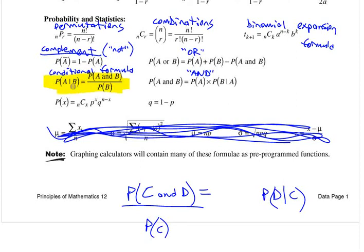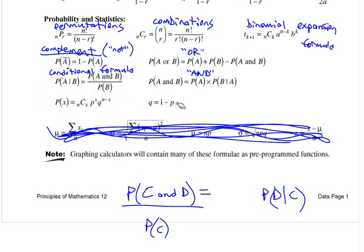That's the conditional probability formula — we're going to use that today. Later on we're going to look at this other formula in 7.7, which is related to binomial stuff.